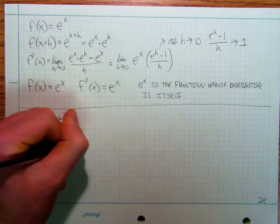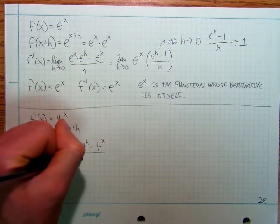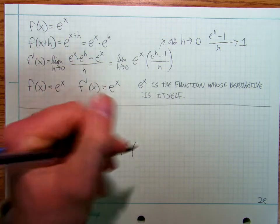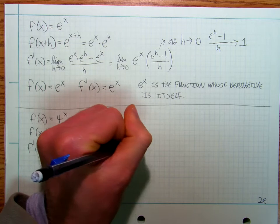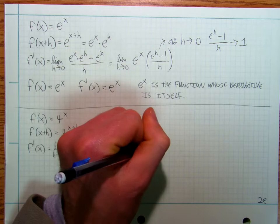And so I'm going to get 4^x times (4^h minus 1) over h.